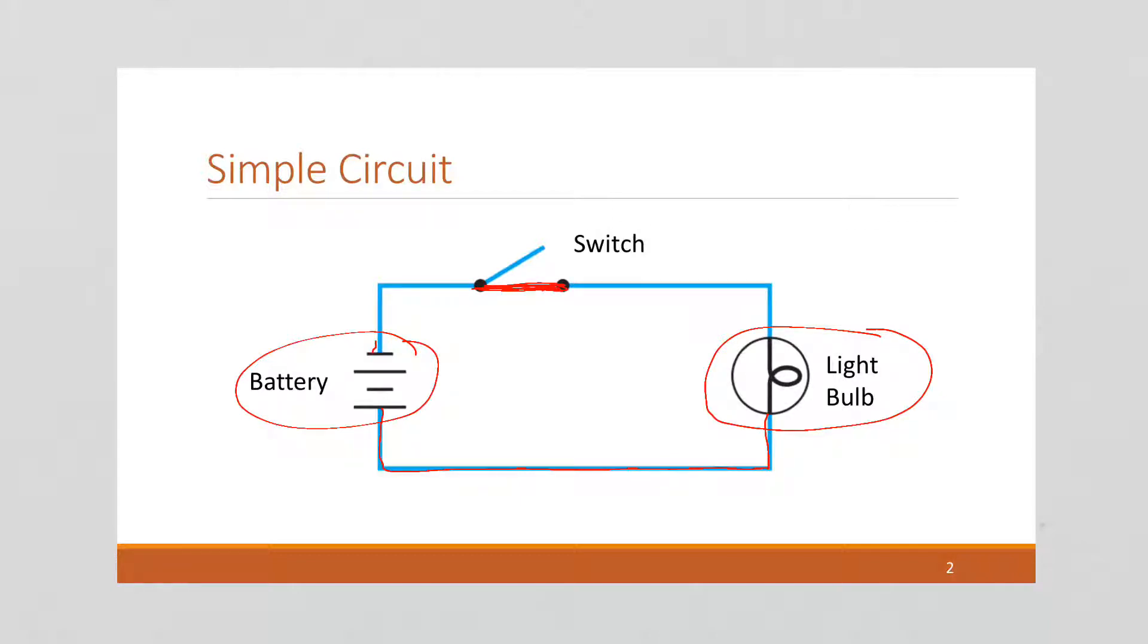If the switch closes, then we have a circuit, the light bulb will get power and it will turn on. This is how a simple circuit works, and we can use this concept to take advantage of our Boolean algebra.